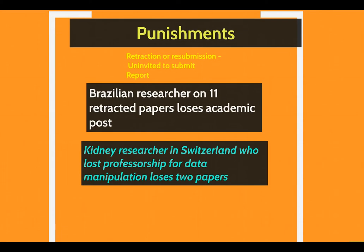What kind of punishments exist? Obviously one is to have the paper retracted or resubmitted. You may have sanctions put on authors — they're uninvited to submit, or a report is made to a funding institution or the author's university. That's complicated, and they don't always seem to get the punishments. Often students get much worse punishments than faculty. Here are some examples: a researcher in Brazil who had 11 papers retracted and then lost his post, and another researcher in Switzerland who lost both his professorship and two of his papers.